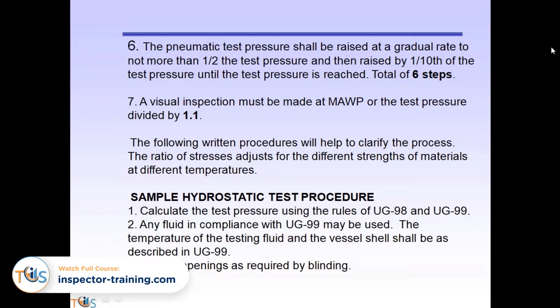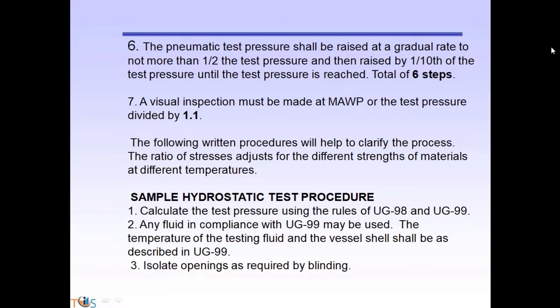UW-40: Procedures for Post-Weld Heat Treatment. This clause gives the particulars of post-weld heat treatment, while the minimum temperatures for post-weld heat treatment are given in tables UCS 56-1, page 172, through UCS 56-11.